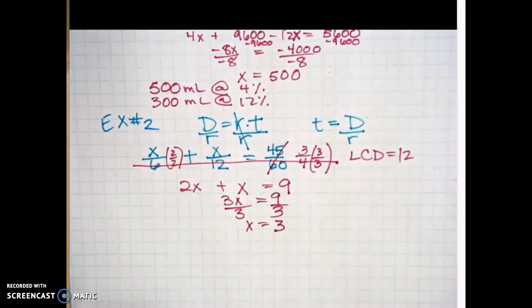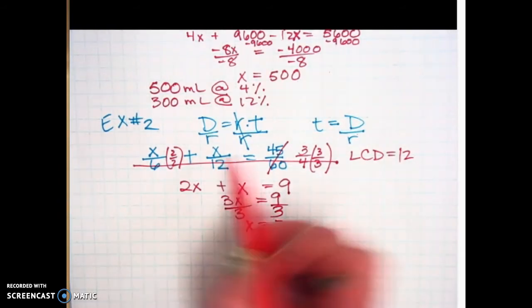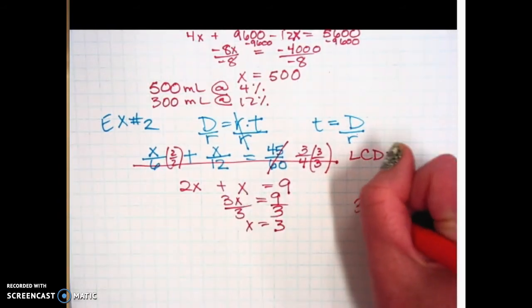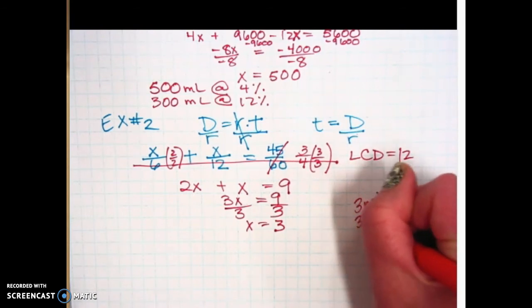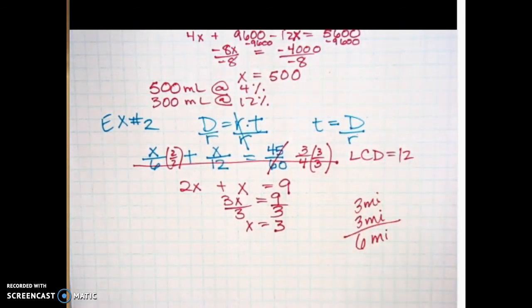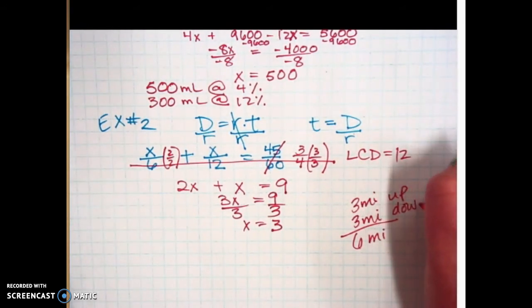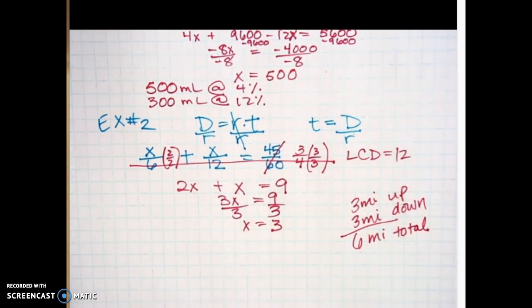And x was referring to the distance going up the hill and the distance going down the hill. So up the hill was three miles. Down the hill was three miles. Total six miles, depending on what the question asks you for: up, down, total. I don't know what the question is going to ask you for. Just read it and see which one it's asking for. Any questions on example number two there?